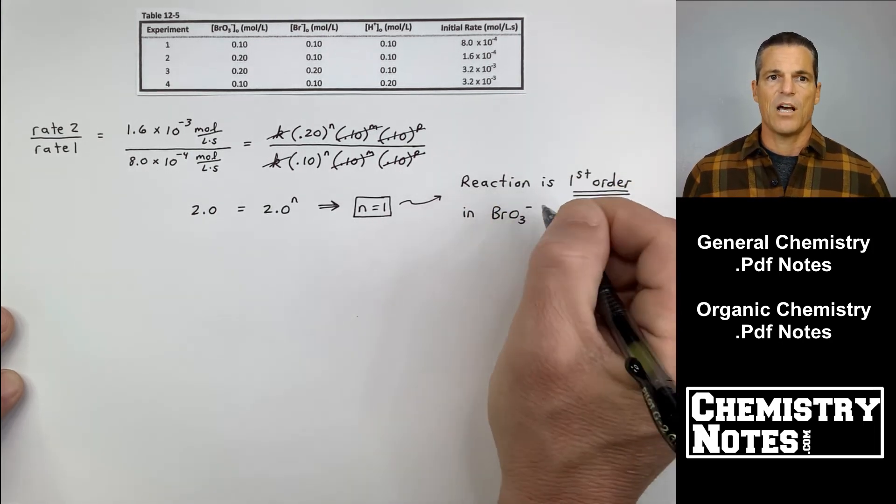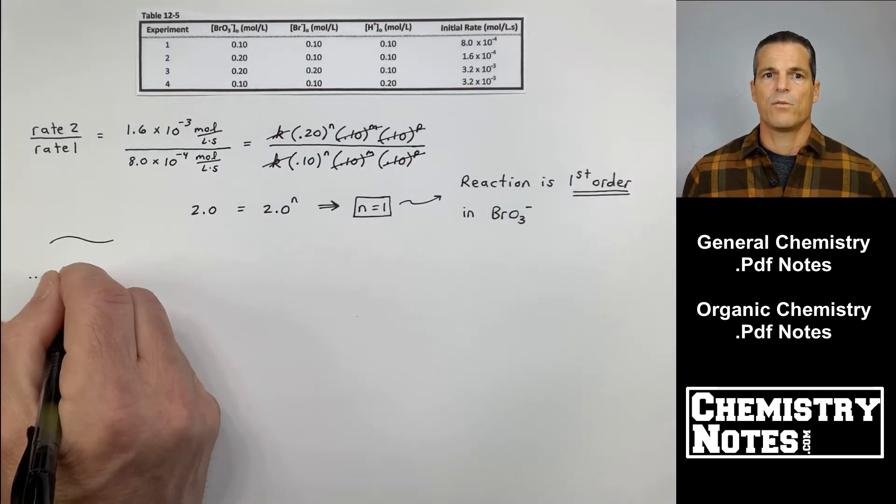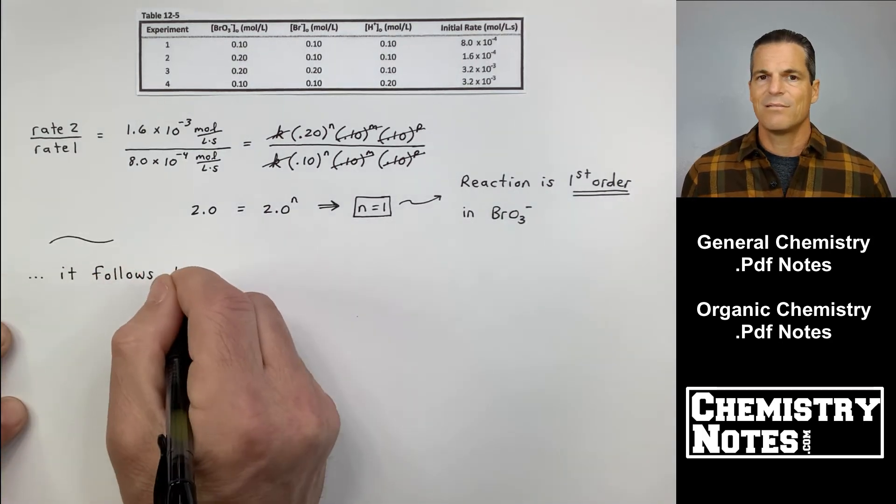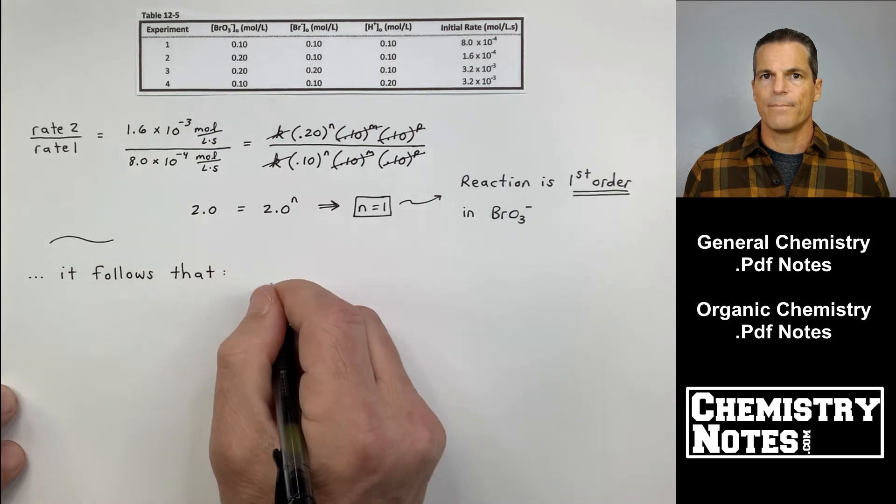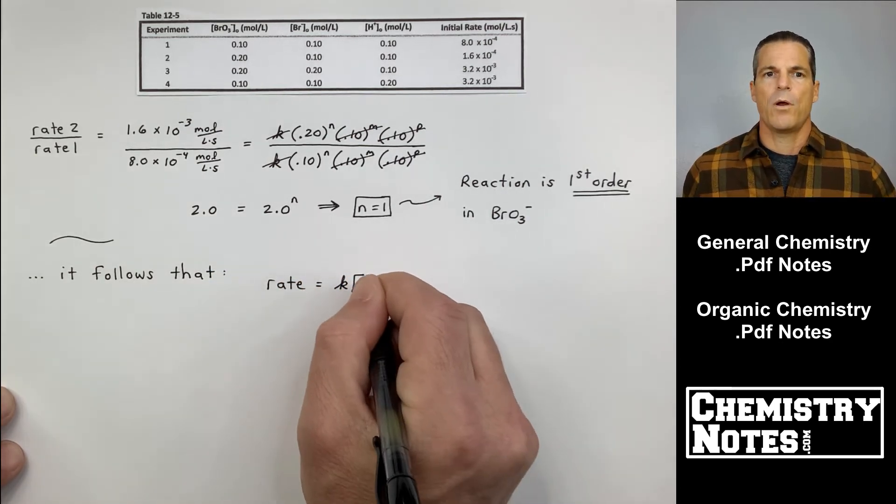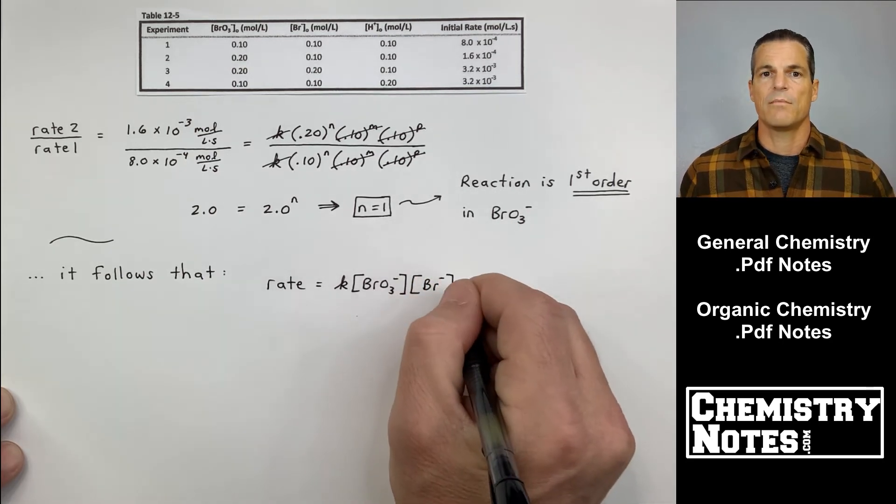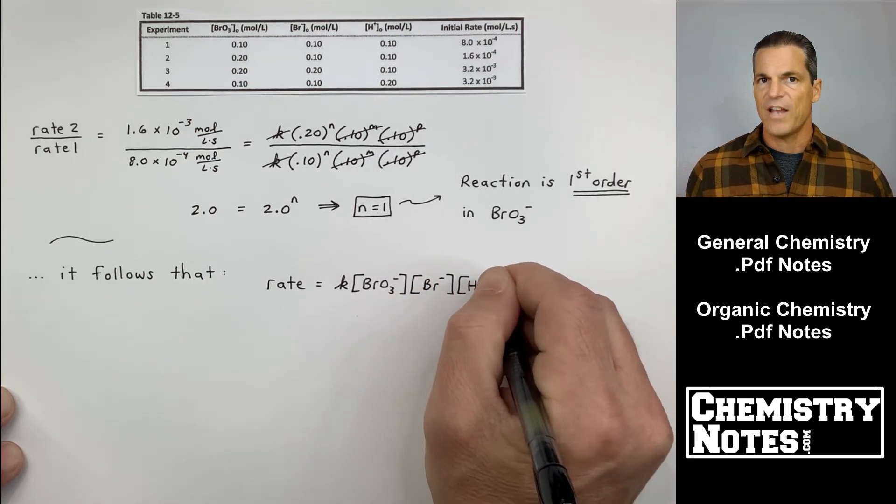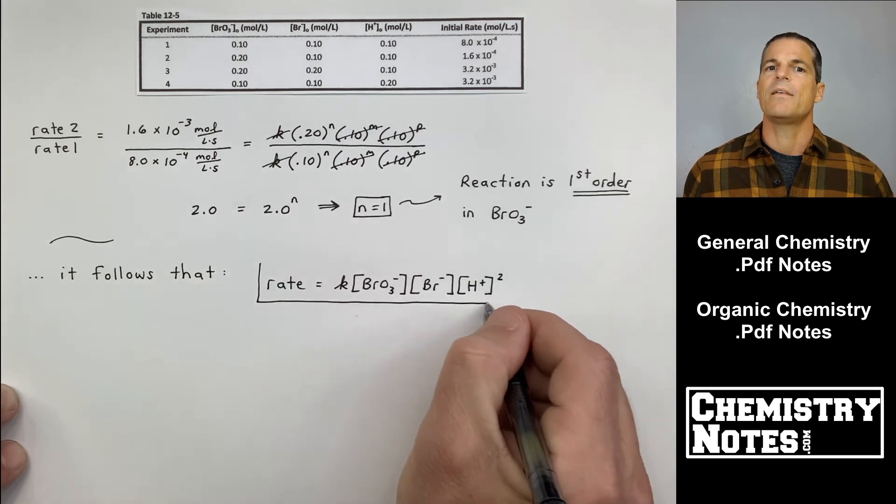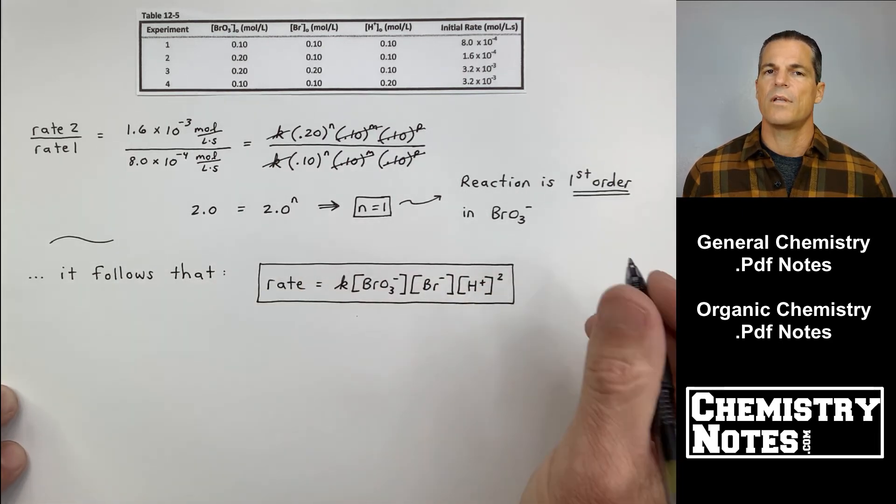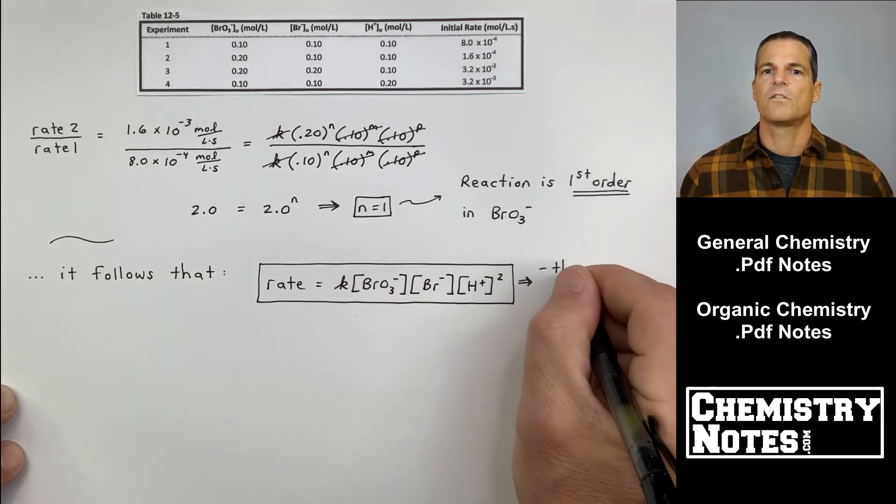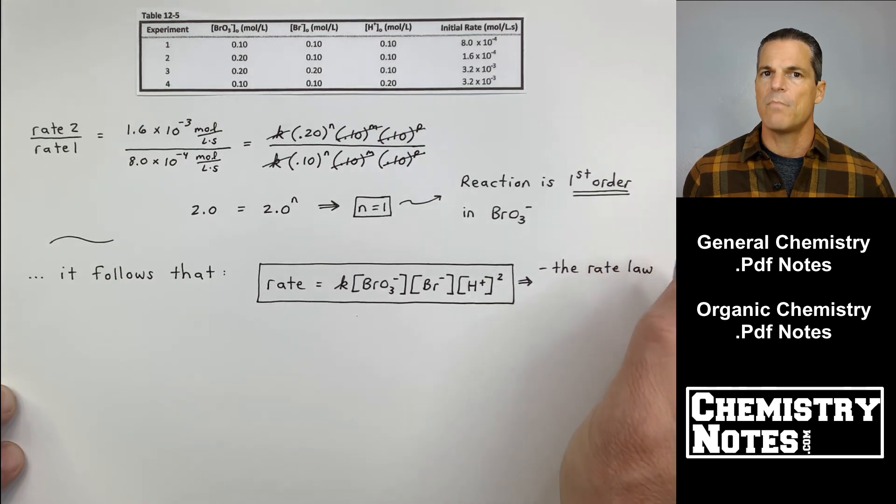You might be wondering, why does Justin do rate 2 over rate 1 instead of rate 1 over rate 2? I like to have numbers that are not fractions. When I get down to it here, it says 2.0 equals 2.0 to the N. If I had done it the other way, it would have been 1 half equals 1 half to the N. You still get N equal to 1. As you get more experience, you'll decide to do rate 2 over rate 1 versus rate 1 over rate 2, but it doesn't matter. I solve for N. N equals 1, that means the reaction is first order in bromate, first order in BrO3-.